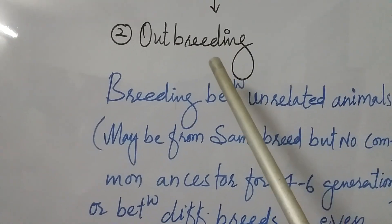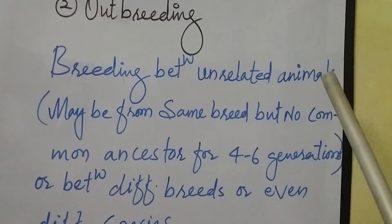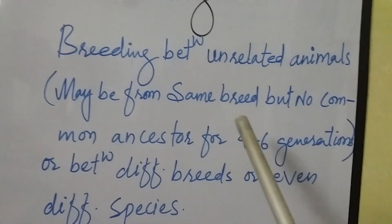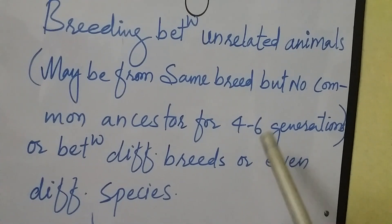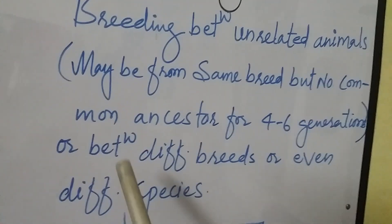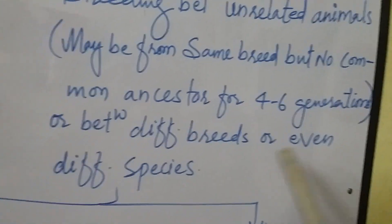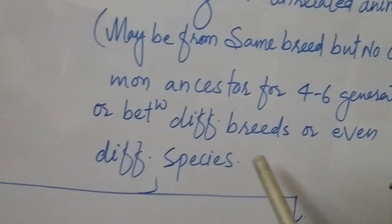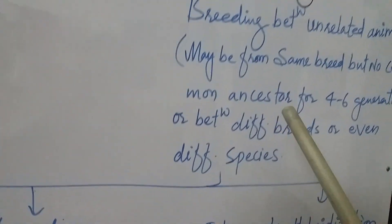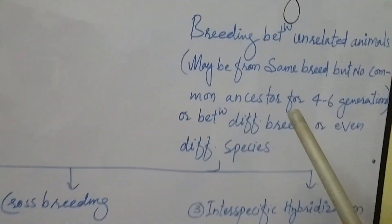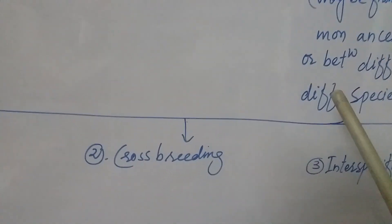Now let's see the detail of outbreeding. Outbreeding is the breeding between unrelated animals — it may be from the same breed but with no common ancestor for four to six generations, or it may be between different breeds, or even between different species. Outbreeding is further classified into a few types.